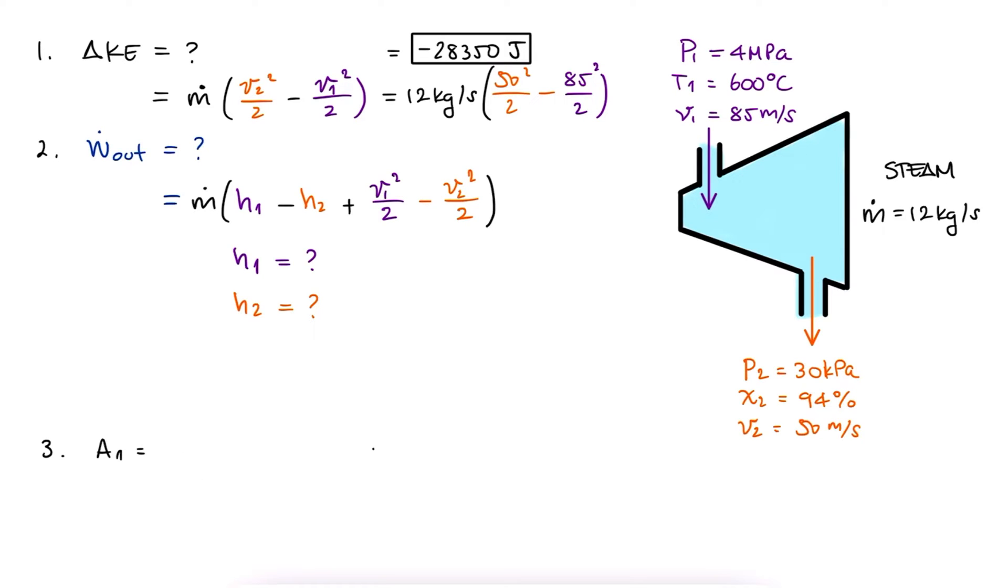And to find the inlet area, we know that mass flow rate is area times velocity over specific volume. This means that to find the area, we need to find the specific volume first.